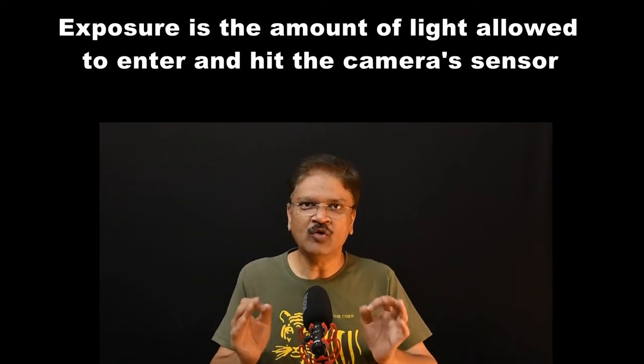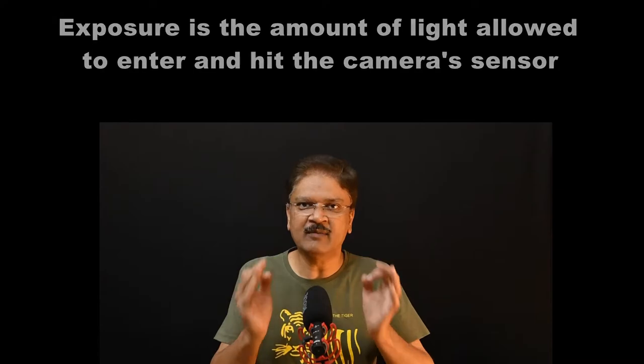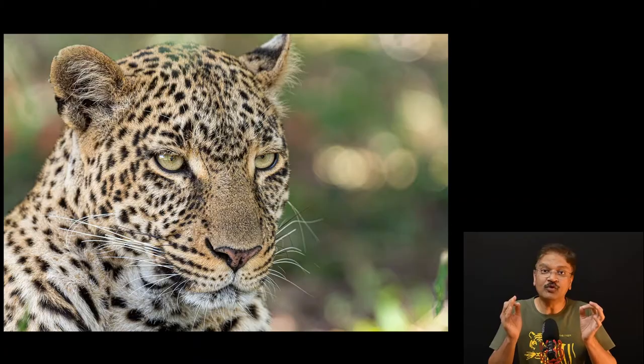Exposure is the amount of light allowed to enter and hit the camera sensor. Naturally, if the light allowed is more than required, it will result in a bright or so-called overexposed image. Contrary to that, if the amount of light allowed to enter is less than required, it will result in a darker or so-called underexposed picture. That means a calibrated or optimum amount of light must hit the sensor to produce a well-exposed image.